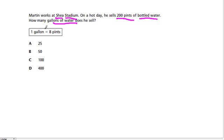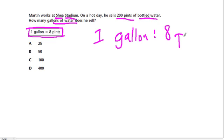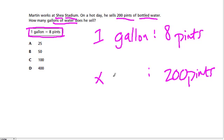So this is a conversion from pints to gallons, and they give us a ratio. One gallon is the same as eight pints, so we're given 200 pints to work with and we want to know how many gallons of water that is. There are many different ways to solve this, and we know that every eight pints gives us one gallon.